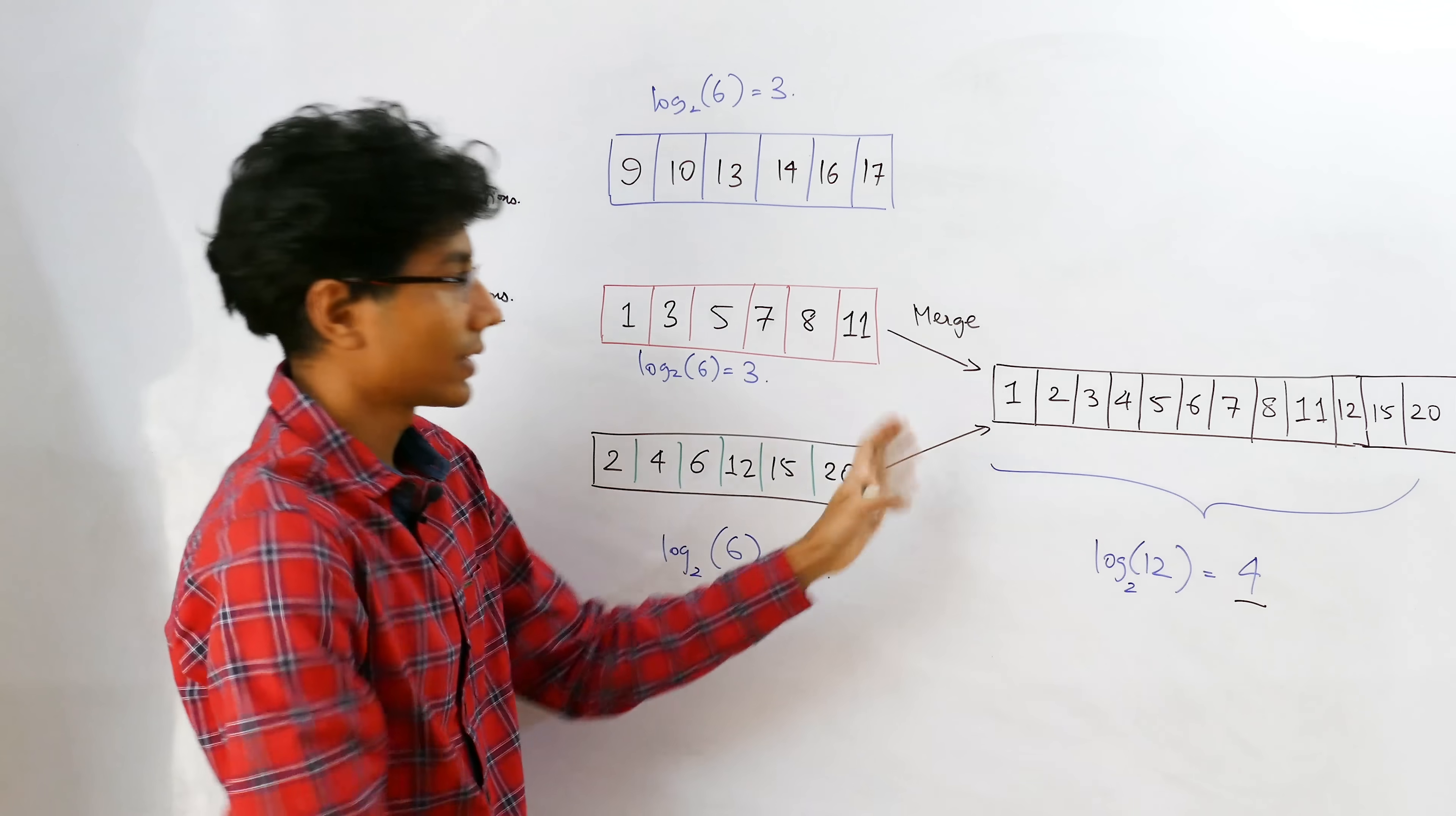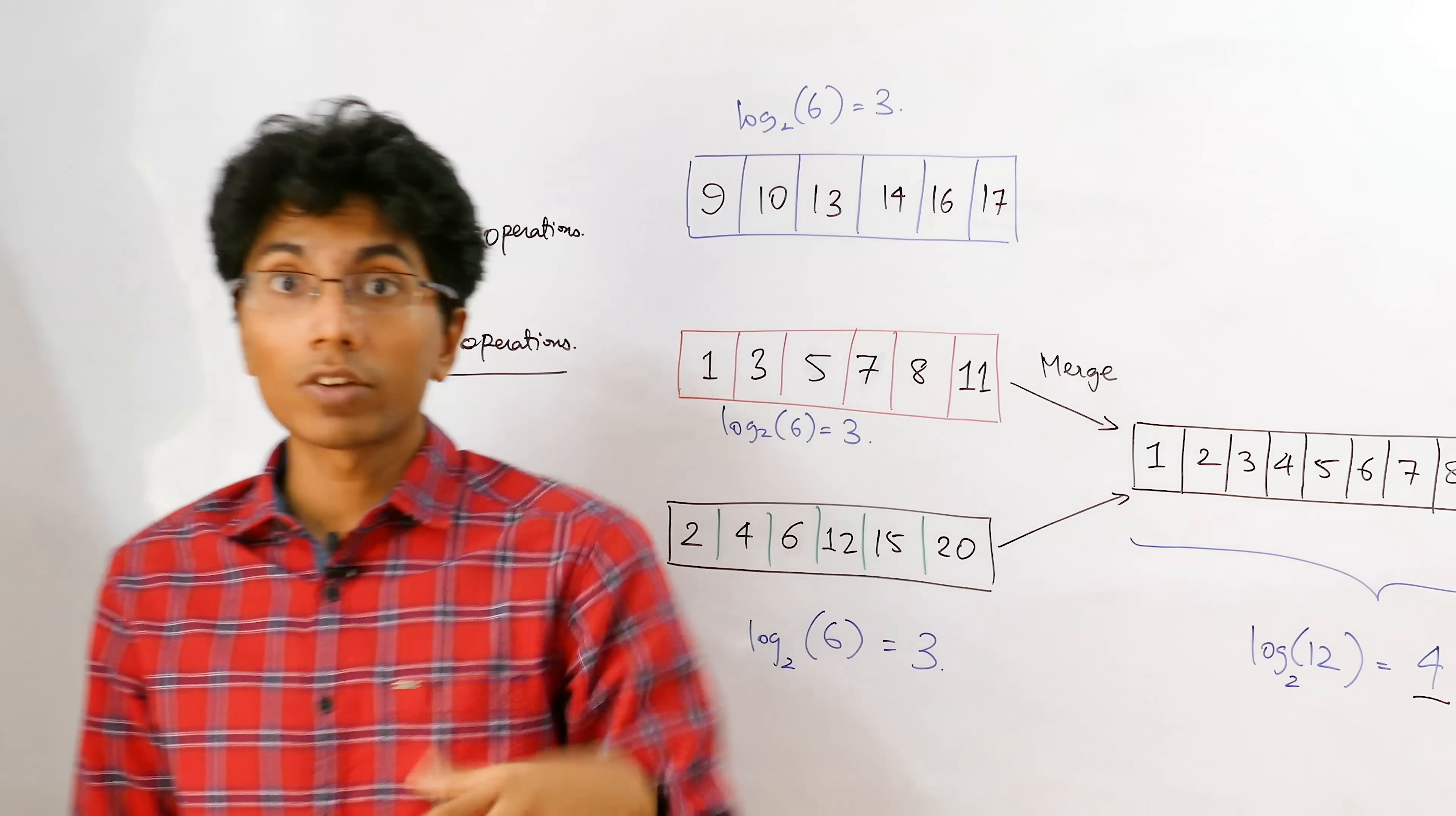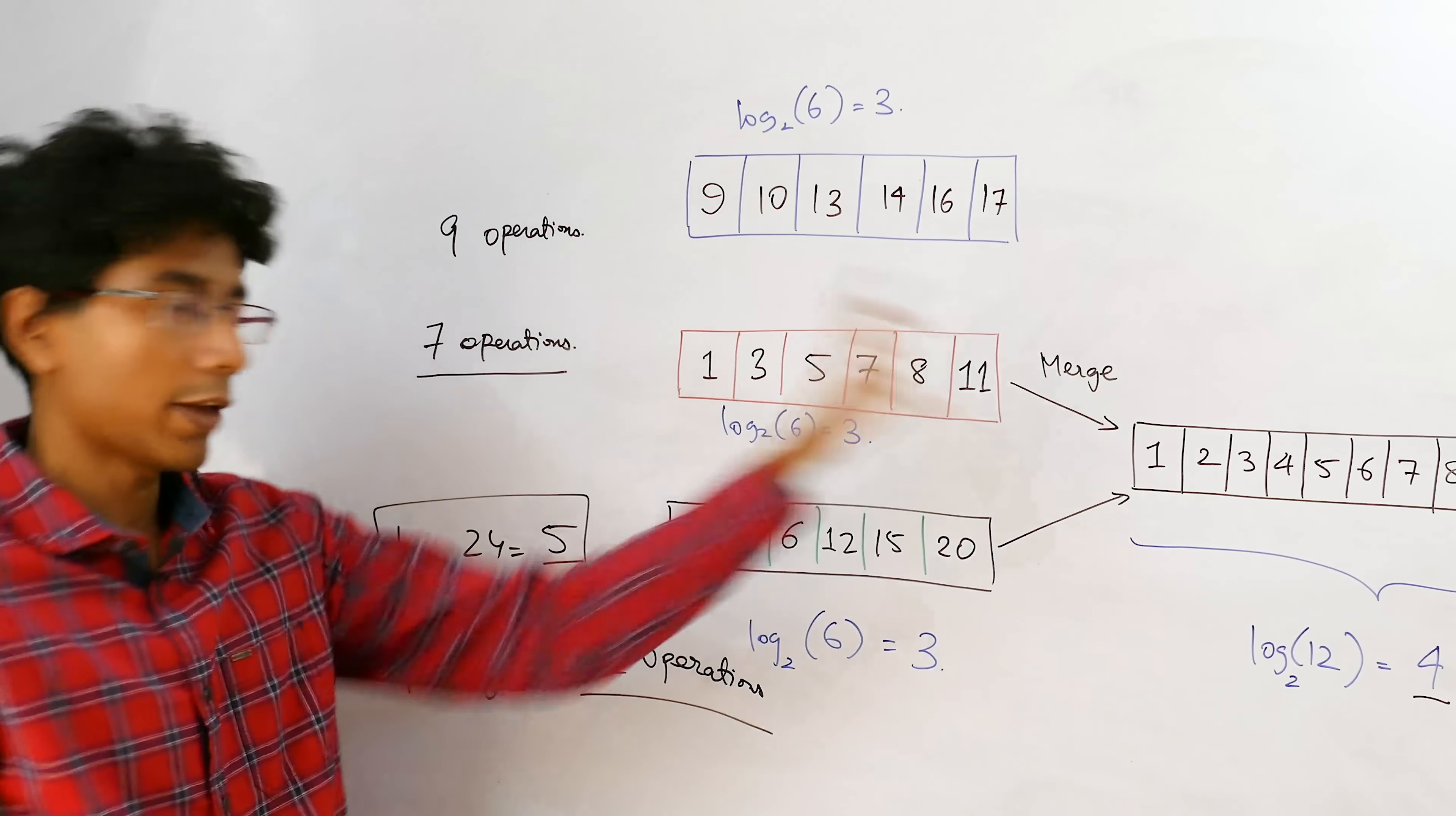And the number of operations I have to do here are three. So three plus four gives you seven operations. So there's a clear saving here, but obviously you need to sort, I mean, you need to merge two sorted areas and then persist it. So that has some overhead. Let's see what is the best approach. If you get another sorted chunk of size six, what I'll do is I'll take these two chunks and merge them together and have two sorted chunks of size 12. Can I do better? Yeah, I can take those two sorted chunks of size 12 and merge them into a single sort of chunk of size 24. So log of 24 to the base two is equal to five approximately.